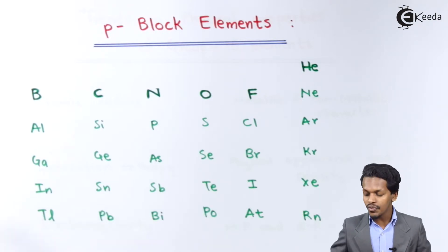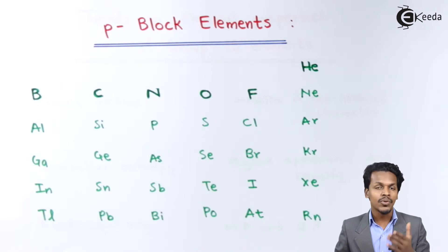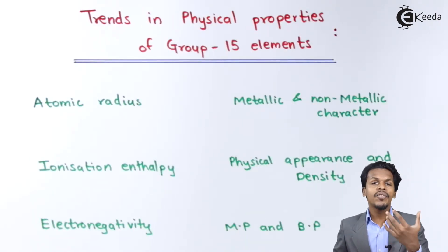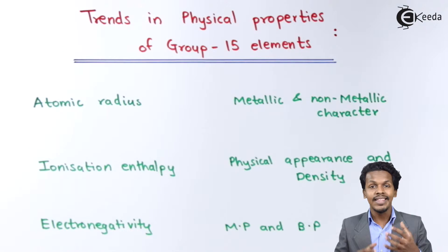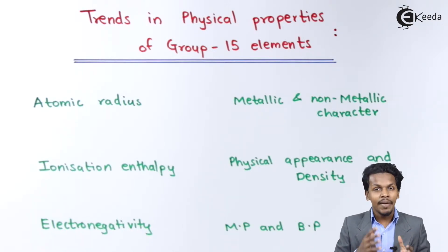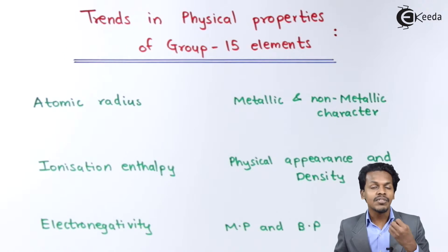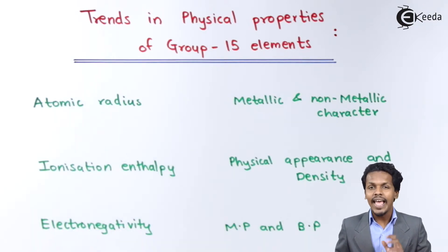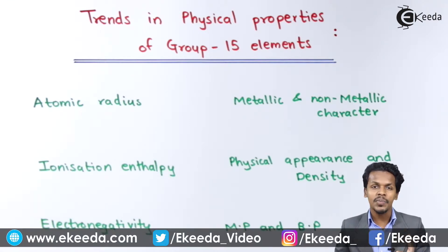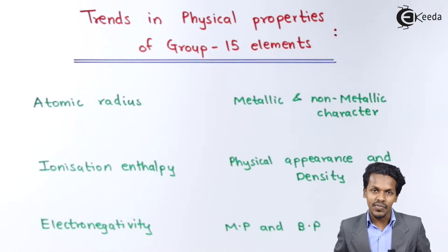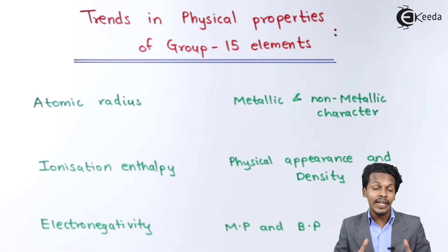As we move down the group from nitrogen to bismuth, the atomic size goes on increasing because of factors such as the increase in nuclear charge, increase in the valence shell, and increase in the principal shell. The difference in covalent radius between nitrogen and phosphorus is relatively large, but the difference between arsenic and bismuth is not as large. Overall, atomic radius increases down the group.